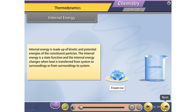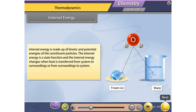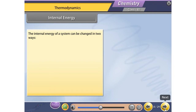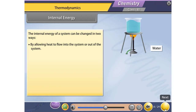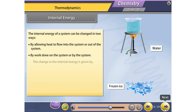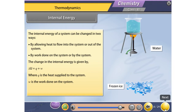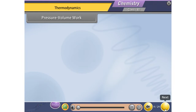Internal energy is made up of kinetic and potential energies of the constituent particles. It is a state function, and the internal energy changes when heat is transferred from system to surroundings or from surroundings to system. The internal energy of an isolated system is constant. It can be changed in two ways: by allowing heat to flow into or out of the system, or by work done on or by the system. The change in internal energy is given by ΔU = Q + W, where Q is the heat supplied to the system and W is the work done on the system. This is the first law of thermodynamics.